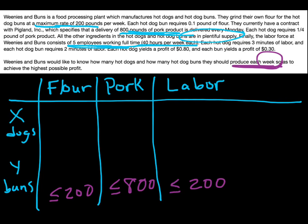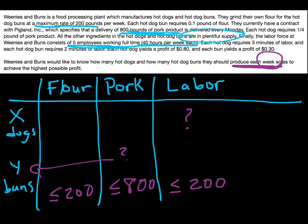And that's all the labor that we have. The rest of the chart helps us figure out the connection between the variables and these other different unknown things. In other words, how much pork is needed for a hot dog bun? How much labor is needed for a hot dog? Things like that. Then you go back through your problem and figure that out.